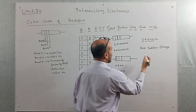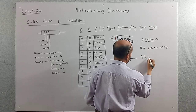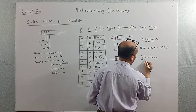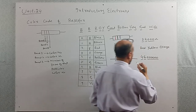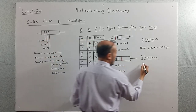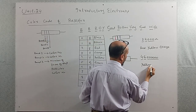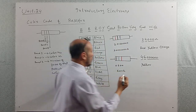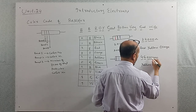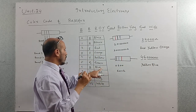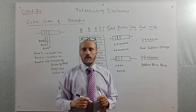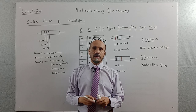Another example: the value is 46,000,000 ohm. We underline 4, underline 6, and the remaining zeros. For 4 it's yellow, for 6 it's blue. Now counting the zeros: there are 6 zeros, so again we write blue. So the color code for 46,000,000 ohm is yellow, blue, and blue. In this way we can determine the color code of resistors.